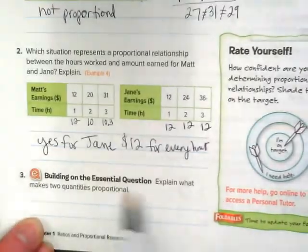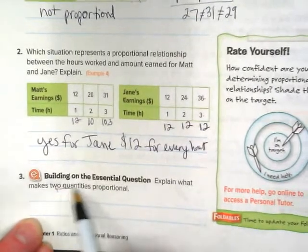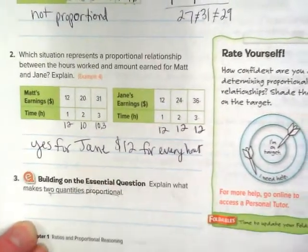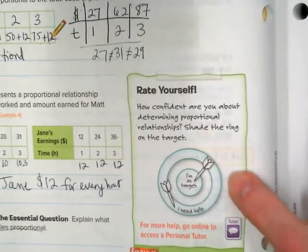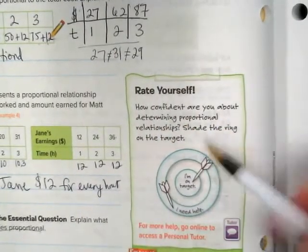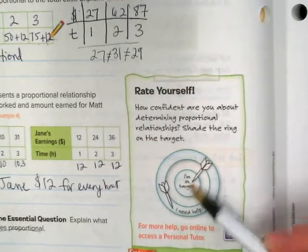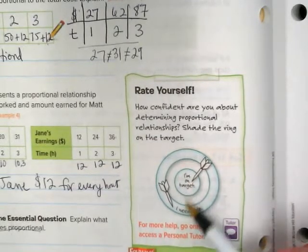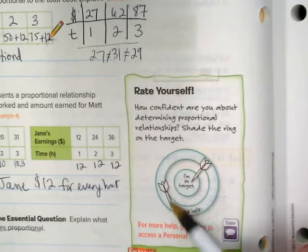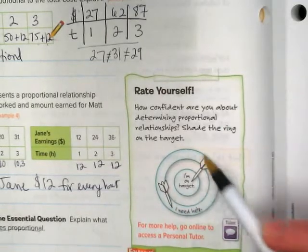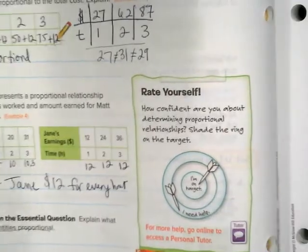I want you to take a moment and answer the essential question: What makes two quantities proportional? Think about that. I want you to rate yourself here. If you feel like this makes sense, you're going to fill in this part. You might be somewhere in the middle. If you need help, go ahead and fill out this part. And then during the work time, I would like you to just check with me as you're working.